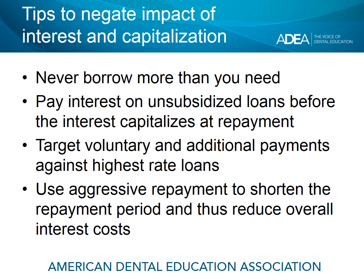We close this module with some tips on how to negate the impact of high interest rates and capitalization on repayment. First, never borrow more money than you really need — just because you can borrow up to the full cost of attendance doesn't mean you have to. If at all possible, pay the interest or some of the interest on your unsubsidized loans before it capitalizes at repayment, as that will help keep the total repayment cost down. Target any voluntary additional payments against the highest interest rate loans in your portfolio. And without question, the best way to reduce the impact is to aggressively pay your student loans back after you graduate from dental school.